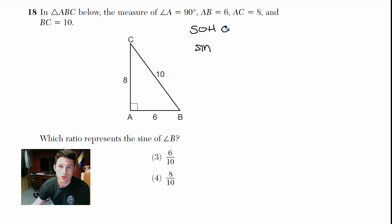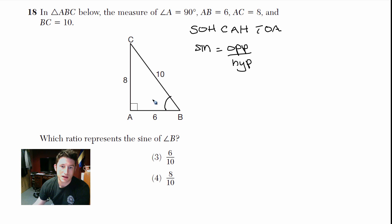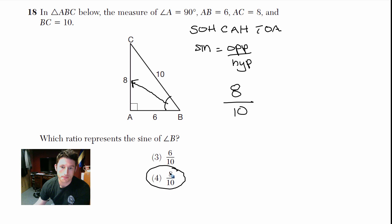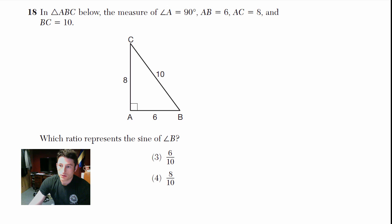The angle we're working with is angle B. The opposite side — shine a flashlight from B, which wall does it hit — that's the side AC, which equals 8. The hypotenuse is always opposite the 90-degree angle, which is BC equals 10. So sine of B equals 8 over 10 — choice 4.